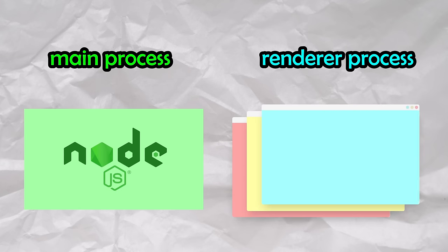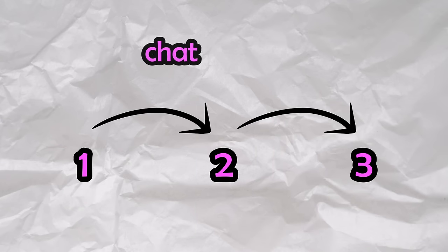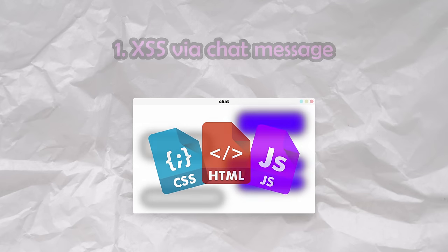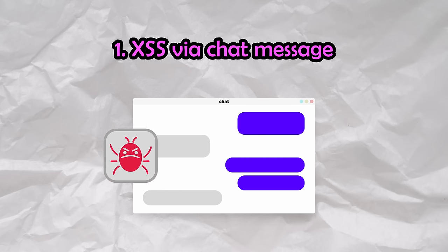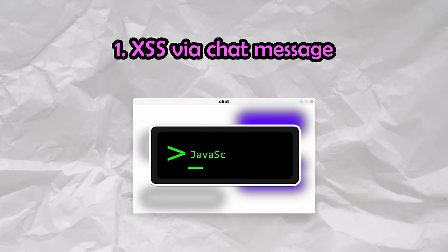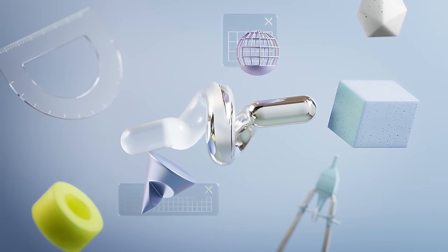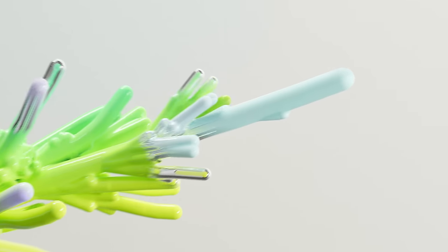Now that we're familiar with Electron at a high level, let's unveil the first exploit in the chain, which takes advantage of the chat feature within Microsoft Teams. The chat feature runs within a renderer process, mimicking the front-end of a web app, which opens the door to cross-site scripting attacks. Through an elegantly crafted chat message, attackers enable themselves to execute arbitrary code within the chat window, without requiring any clicks from the user.